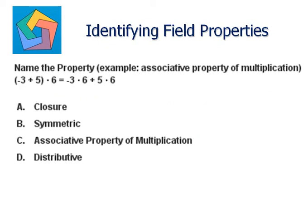Next problem. Name the property, for example: associative property of multiplication. Negative 3 plus 5, times 6, is equal to negative 3 times 6 plus 5 times 6.